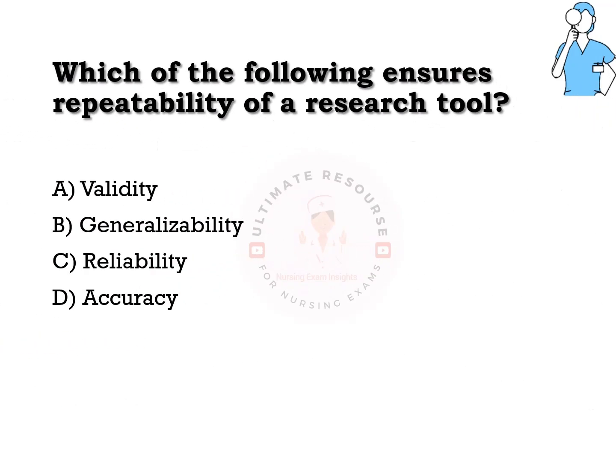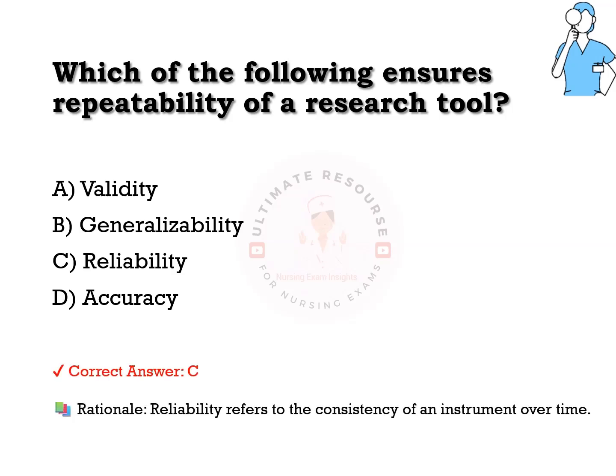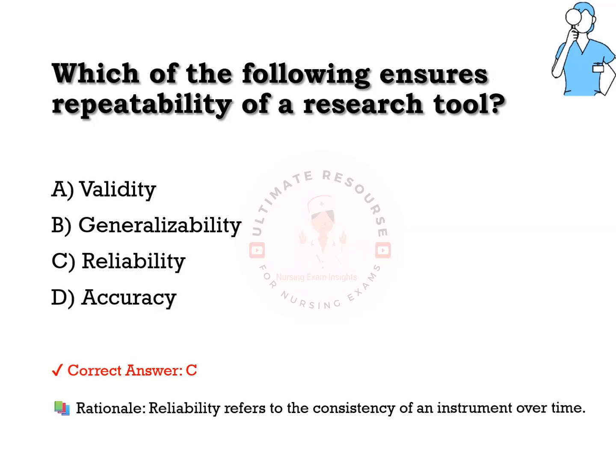Which of the following ensures repeatability of a research tool? Options are a) validity, b) generalizability, c) reliability, d) accuracy. The answer is c) reliability. Reliability refers to the consistency of an instrument over time.